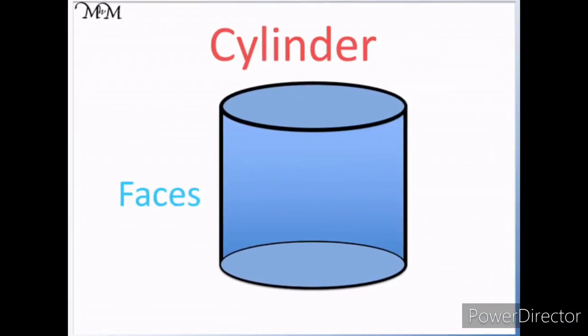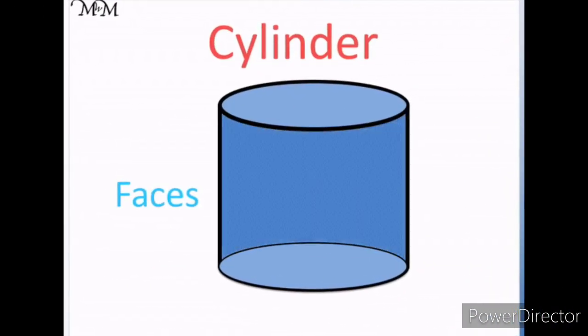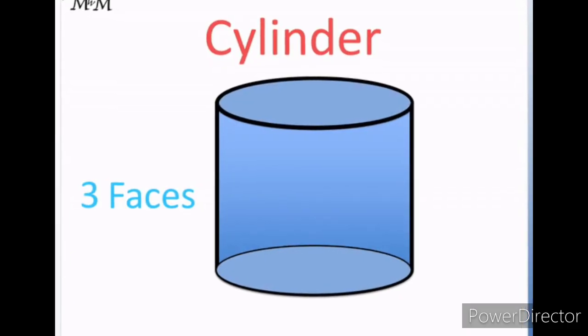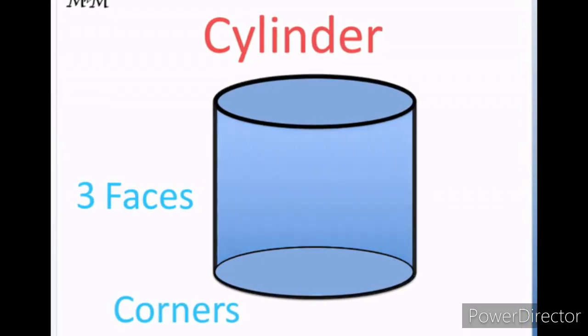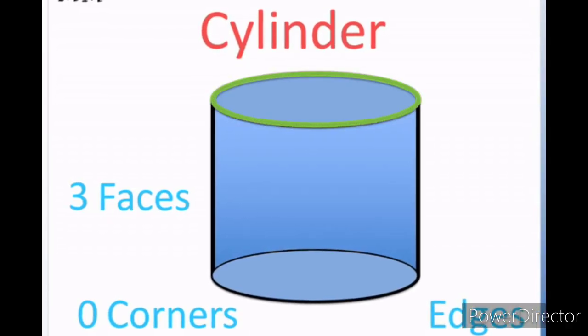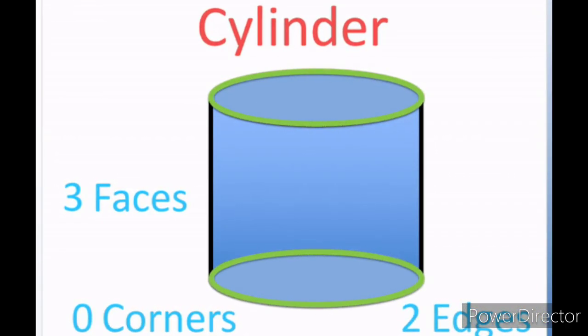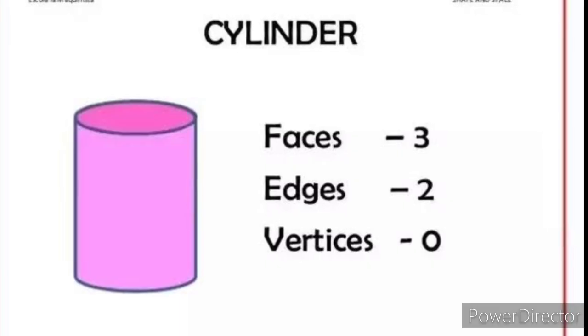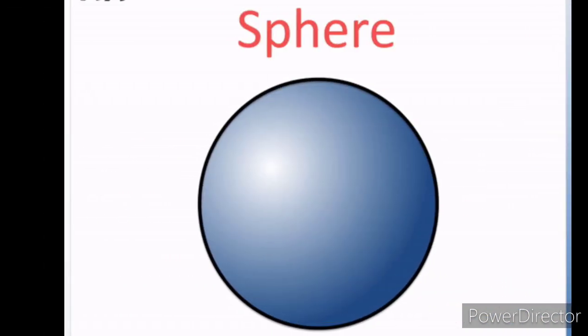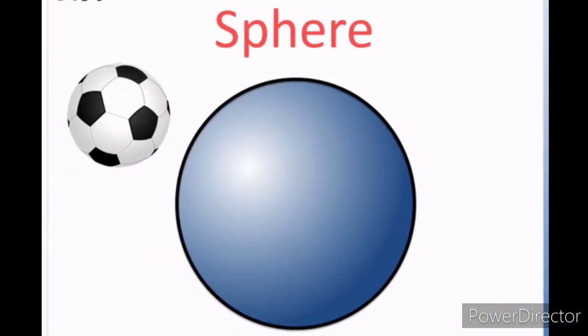Next we'll see cylinder. Cylinder has totally 3 faces and it has no corners. You can see there are no corners. And to tell you how many edges it has, it has 2 edges. Now coming to sphere.